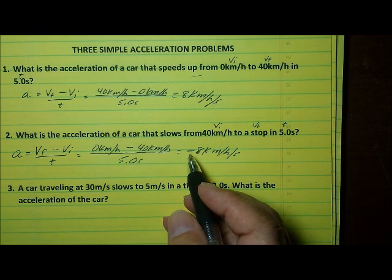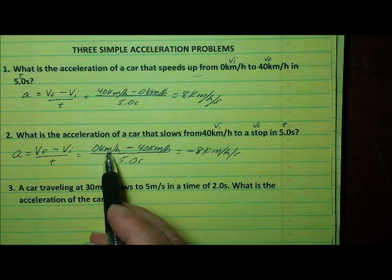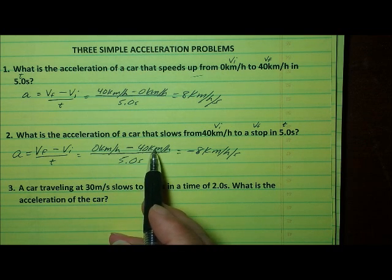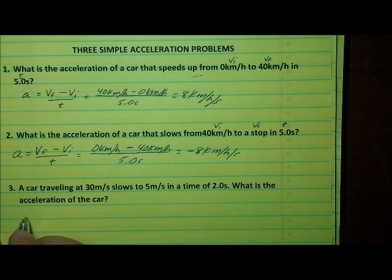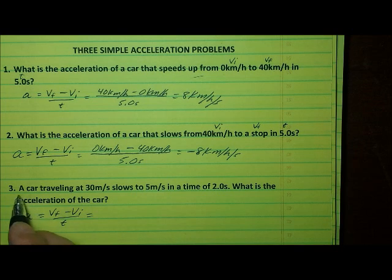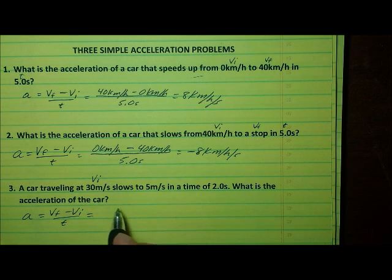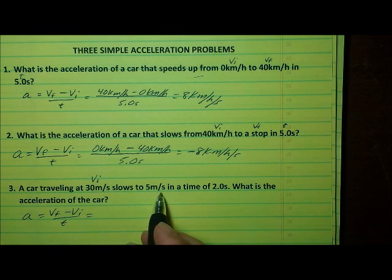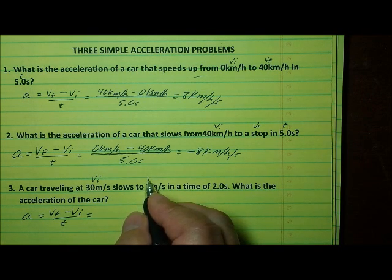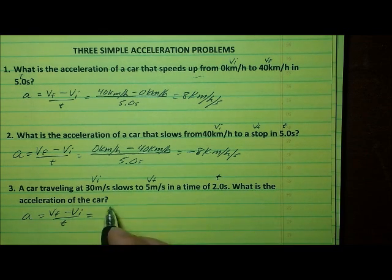Negative acceleration means slowing down. That's why it's really important to make sure you have the initial and final velocities in the correct position in the problem. For the third problem, we can use that same equation: a equals v sub f minus v sub i divided by t. A car traveling at 30 meters per second — that's the initial velocity — slows to 5 meters per second, the final velocity. In a time of 2 seconds. What is the acceleration of the car?